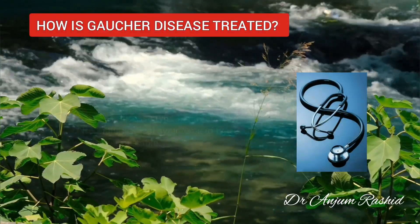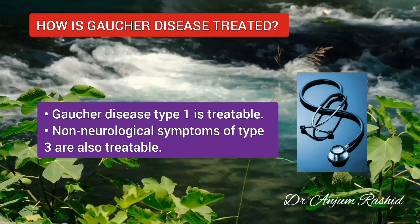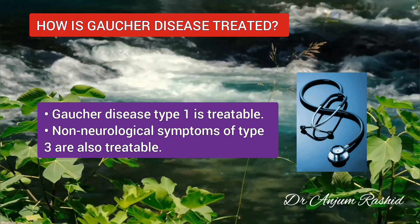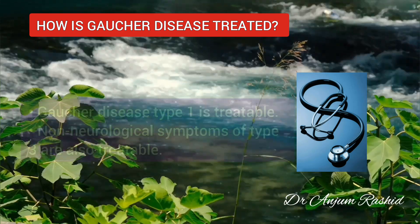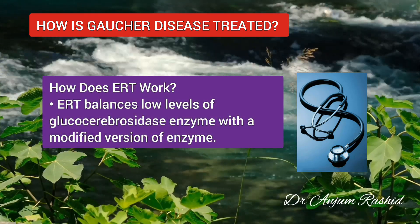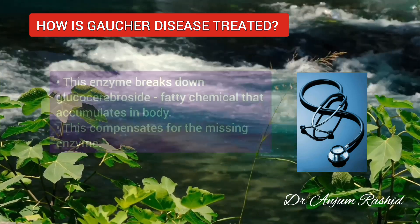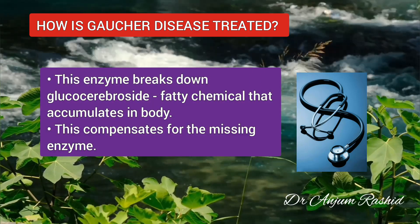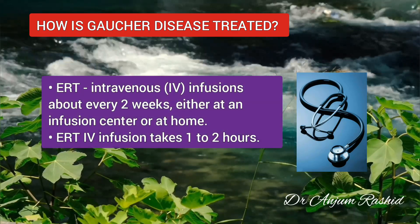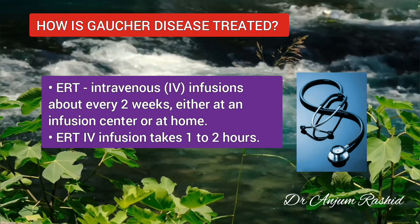How is Gaucher disease treated? Gaucher disease type 1, the most common form in western countries, is treatable. The non-neurological symptoms associated with type 3 are also treatable. Available treatments include enzyme replacement therapy (ERT) and substrate reduction therapy (SRT). ERT balances low levels of glucocerebrosidase enzyme with a modified version of the enzyme, which breaks down glucocerebroside. ERT involves receiving intravenous infusions about every 2 weeks, either at an infusion center or at home, usually taking 1–2 hours. ERT drugs include imiglucerase, velaglucerase alfa and taliglucerase alfa.